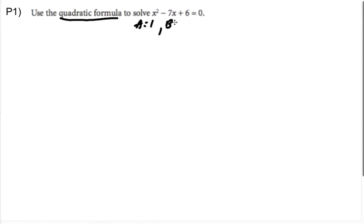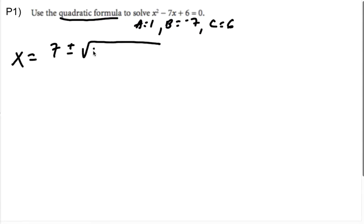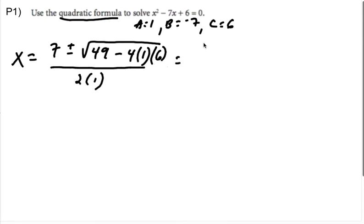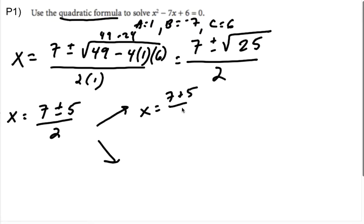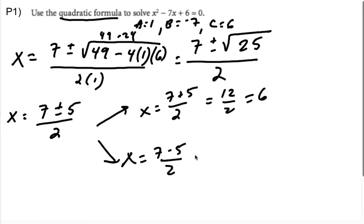For P1: a = 1, b = -7, and c = 6. So x equals negative b — which is positive 7 because it's the opposite of -7 — plus or minus the square root of b² = positive 49 (squaring -7 gives positive 49), minus 4(1)(6), all over 2(1). Inside the root: 49 - 24 = 25. So x = (7 ± 5) / 2. That gives x = (7+5)/2 = 12/2 = 6, or x = (7-5)/2 = 2/2 = 1. My two answers are x = 1 and x = 6.